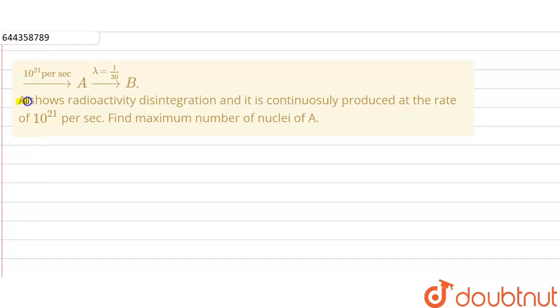The question is: A shows radioactive disintegration and it is continuously produced at the rate of 10^21 per second. Find the maximum number of nuclei of A.